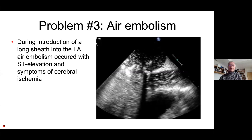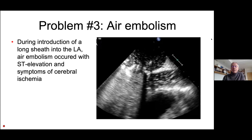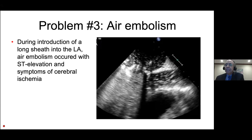Then we had problem number three, and that was air embolism. That is something which can always happen when you have a sheath in a low pressure area like the left atrium. This was a seven or eight French sheath. Air occurred, and you can see it here on the still frame. What happened then was ST elevation and symptoms of cerebral ischemia, which is typical for air because it goes everywhere. One option is to give 100% oxygen through a mask, because the bubbles are 80% nitrogen and with 100% oxygen, the nitrogen dissolves quickly and the bubbles disappear.